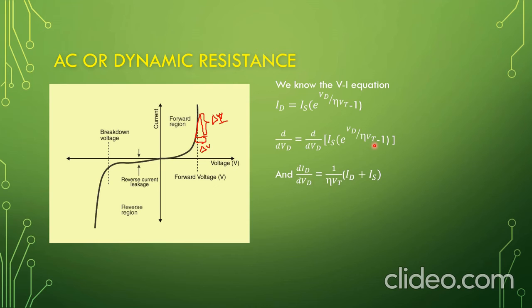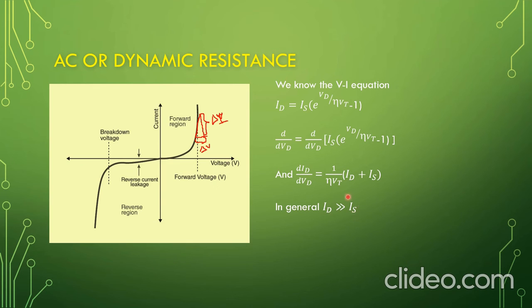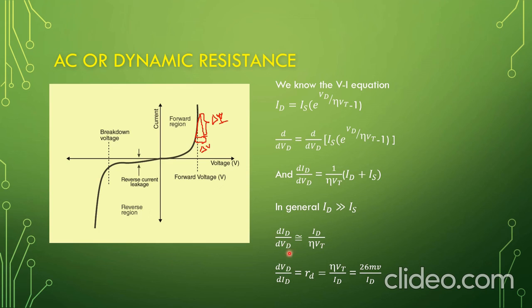So d(ID)/d(VD) equals (1 / eta·VT) times (ID plus IS). In general, the diode forward current ID is much larger than the reverse saturation current IS, so we can neglect IS. This gives d(ID)/d(VD) approximately equal to ID divided by eta·VT. Taking the reciprocal, d(VD)/d(ID) equals RD — the small-signal dynamic resistance rd — which equals eta·VT divided by ID. We get the inverse slope.